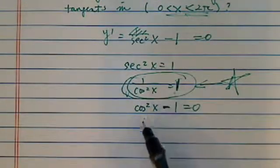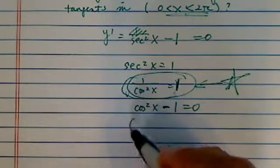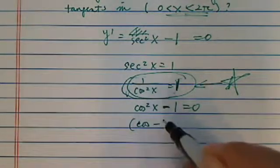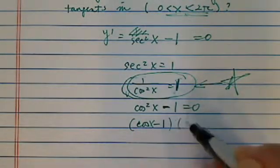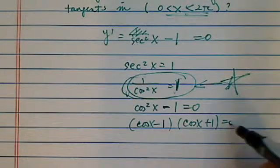A better way to do this one is actually just do a subtraction and then factor it. So you have (cos x - 1)(cos x + 1) = 0.